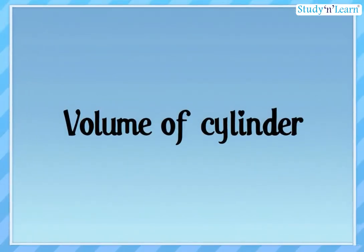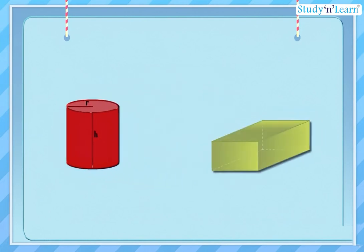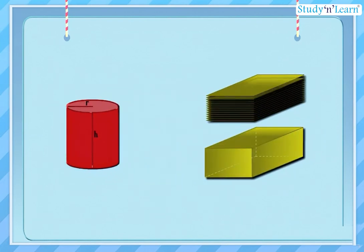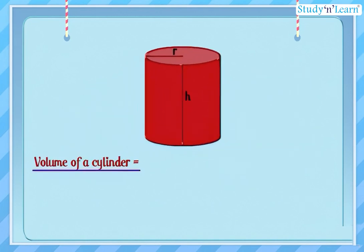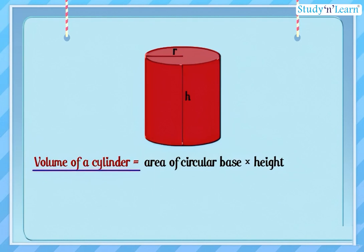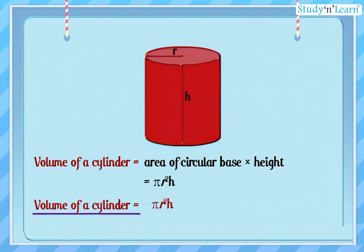In this module we will talk about the volume of a cylinder. Just as a cuboid is built up with rectangles of the same size, a right circular cylinder can be built using circles of the same size. Using the same argument as for a cuboid, the volume of a cylinder can be obtained as base area into height, which equals pi r square h, where r is the base radius and h is the height of the cylinder.